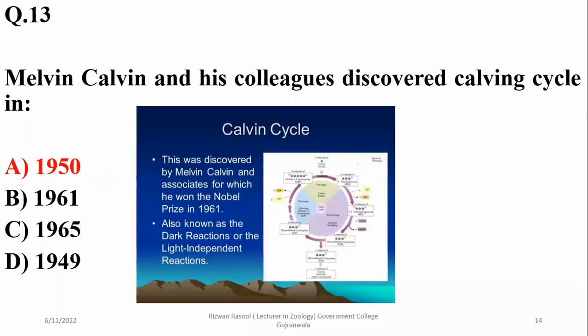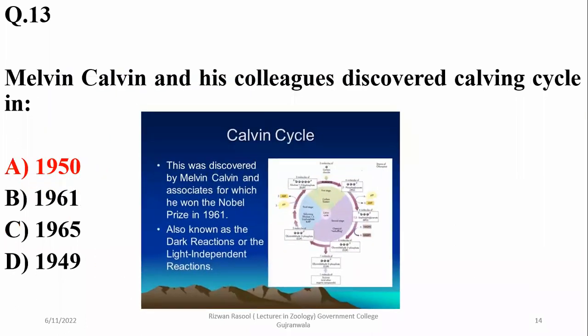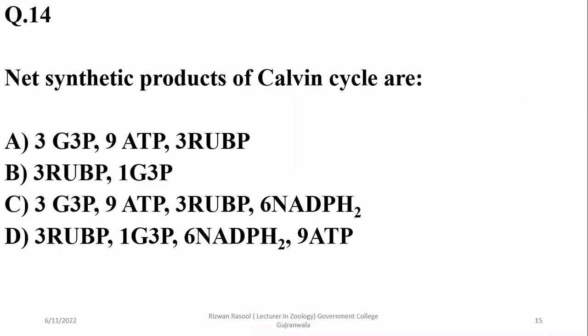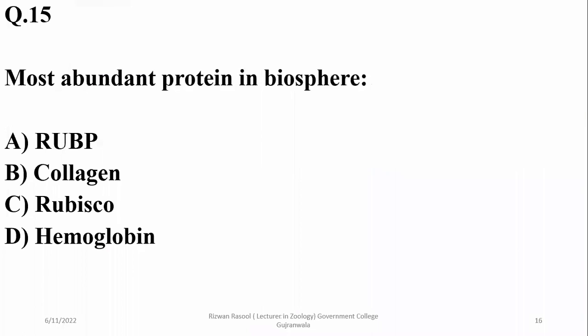Question thirteen: Melvin Calvin and his colleagues discovered the Calvin cycle. The Calvin cycle was discovered in 1950, and Melvin Calvin was awarded the Nobel Prize in 1961. The net synthetic products of the Calvin cycle are one molecule of G3P and three molecules of RuBP. Question fourteen: The most abundant protein in the biosphere is RuBisCO, the carboxylase oxygenase enzyme.